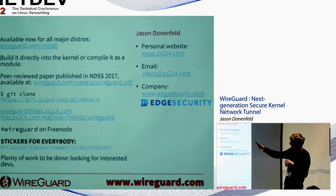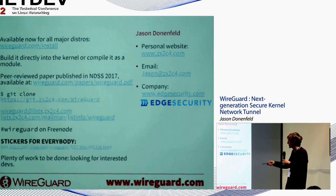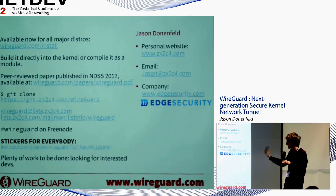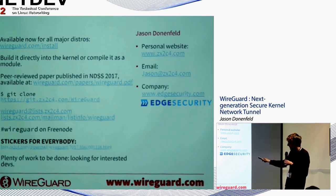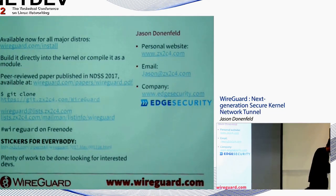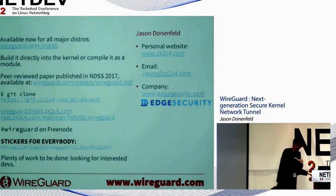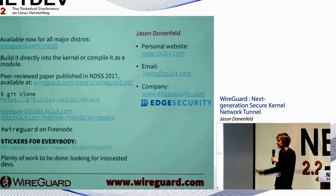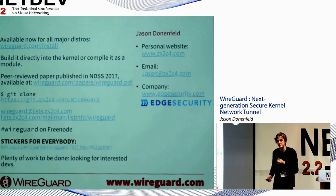In conclusion: WireGuard is available for all distributions — wireguard.com/install gives the full list. You can build it into your kernel or compile it as a module. There's a peer-reviewed paper published at NDSS covering the crypto background and overall design. There's a mailing list, Git repo, and #wireguard on Freenode. Stickers available. Plenty of work to be done if anyone wants to contribute.